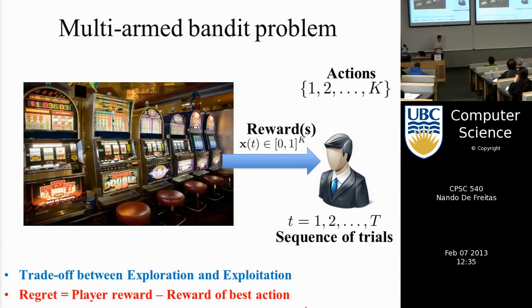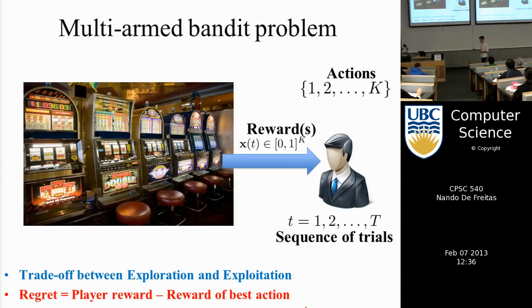Even in this simple scenario, one encounters the exploration-exploitation dilemma. Say every dollar you put in a machine gives you a hundred back — awesome, so 20 times 100 and you walk out with 2,000 bucks. But you try another machine, which gives back only a dollar, so you go back to the better one. You might decide to stick with the best one you've found.